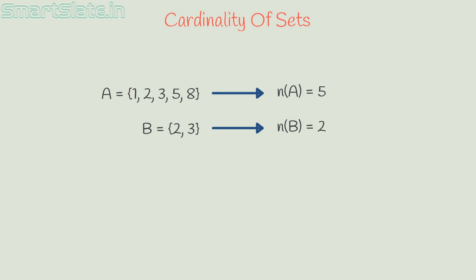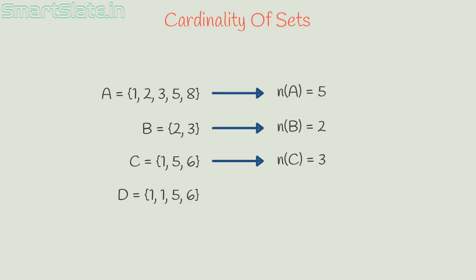If set C has elements 1, 5 and 6, then cardinality of set C is equal to 3. If set D has elements 1, 1, 5 and 6, then the distinct elements in this set is 3. So cardinality of D, n of D, is 3.